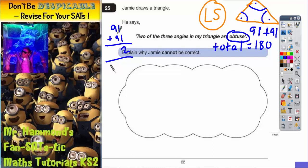1 plus 1 is 2. 9 plus 9 is 18. Straight away, we've got 182 degrees. And we haven't even got a third angle. So it can't possibly total 180 degrees if we've only gone over 180 without a third angle.